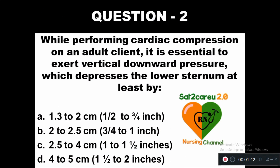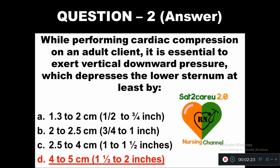Question 2: While performing cardiac compression on an adult client, it is essential to exert vertical downward pressure which depresses the lower sternum at least by: option A 1.3 to 2 cm (half to 3/4 inch), option B 2 to 2.5 cm (3/4 to 1 inch), option C 2.5 to 4 cm (1 to 1.5 inches), option D 4 to 5 cm (1.5 to 2 inches). You need to give vertical downward pressure which depresses the lowest sternum when giving cardiac compression for an adult client. The right answer is D, 4 to 5 cm.